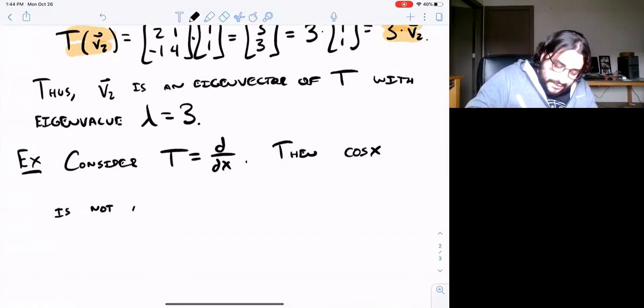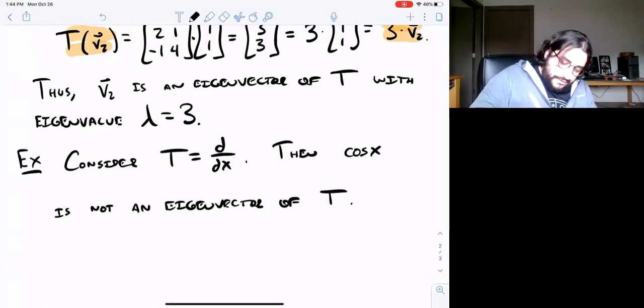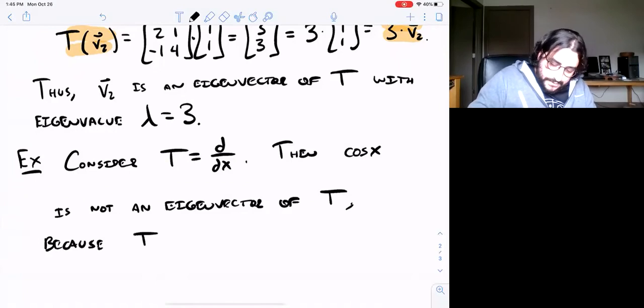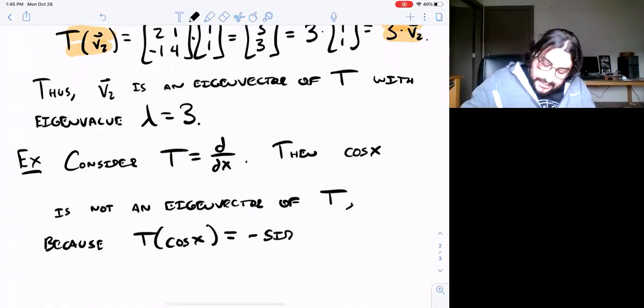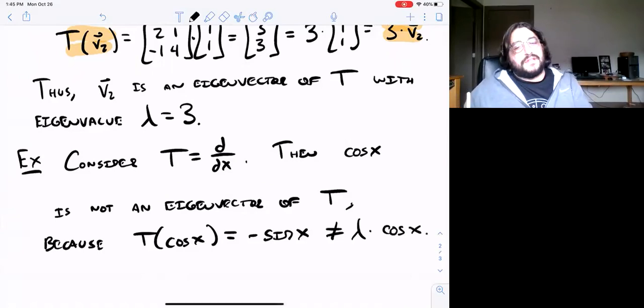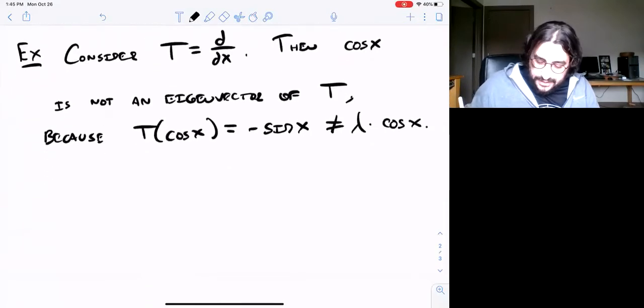This is not an eigenvector of T. Why? Well, if you take T(cos(x)), that's telling me to apply the first derivative to cosine. I get -sin(x), and -sin(x) is not just equal to some constant, some scalar, times cos(x).